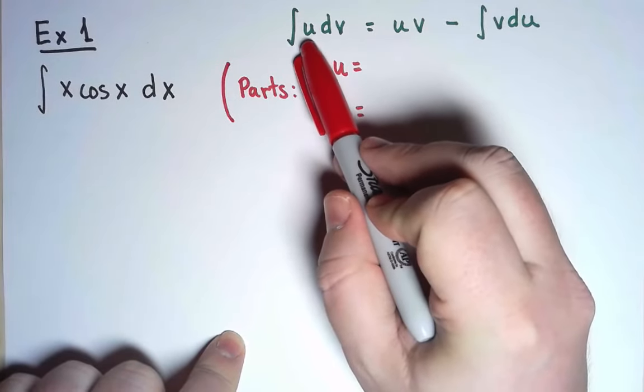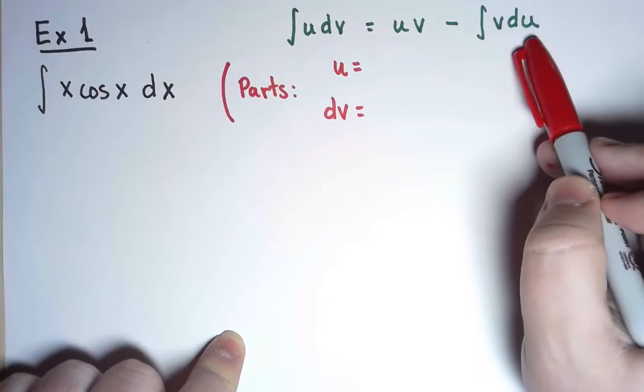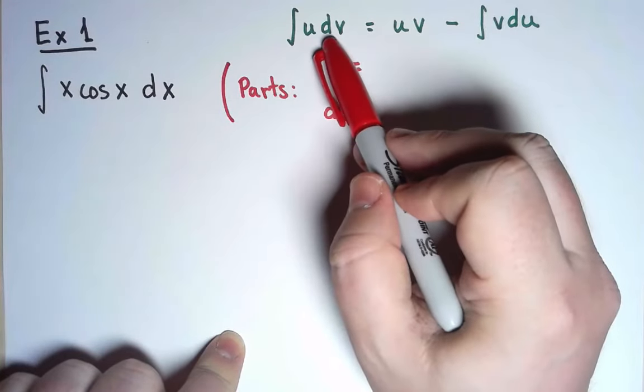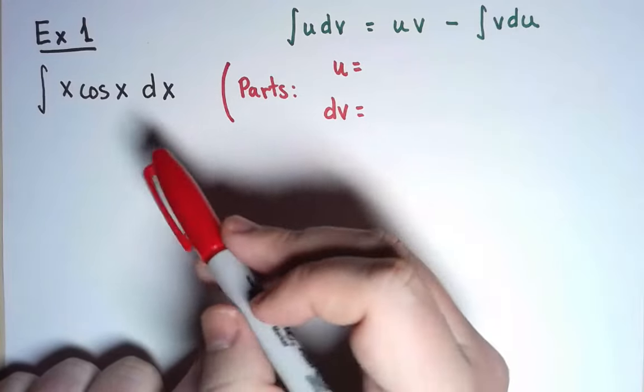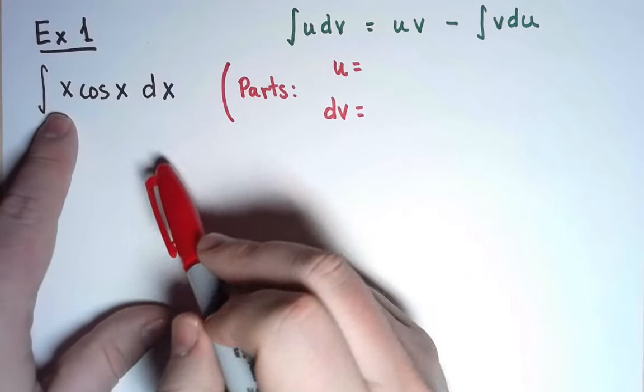Whatever I choose as u, I will need to take the derivative of it. Whatever I choose for dv, I will need to take the antiderivative. So let's examine the derivatives and antiderivatives of x and cos x.